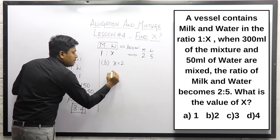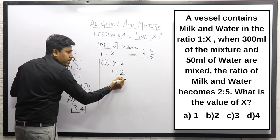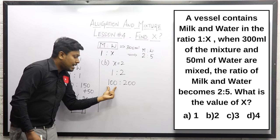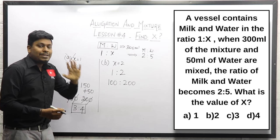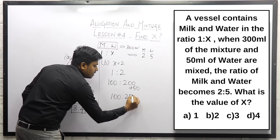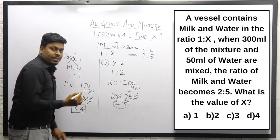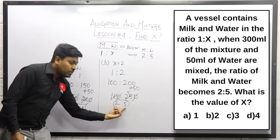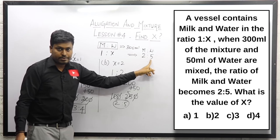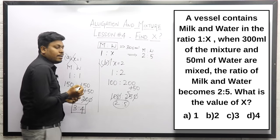With milk to water ratio 1 is to 2 out of 300 ml: milk is 1 part, water is 2 parts, so 100 ml will be milk and 200 ml will be water. Now 50 ml of water is added, so water becomes 250 ml. The ratio is 100 is to 250 — cancel zeros and divide by 5 — this becomes 2 is to 5. The final ratio matches 2 is to 5 as given in the question.